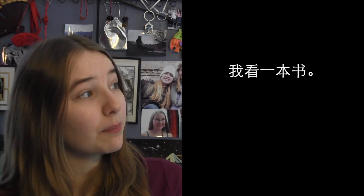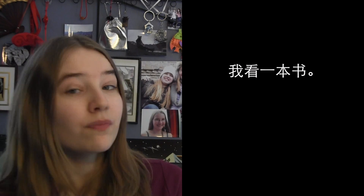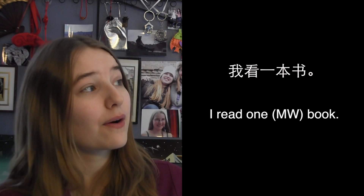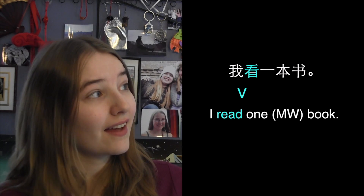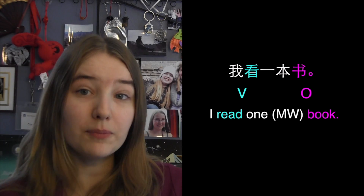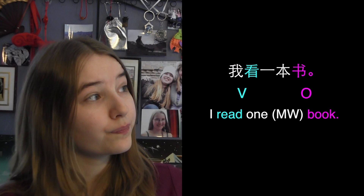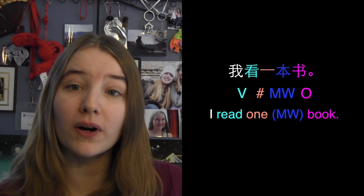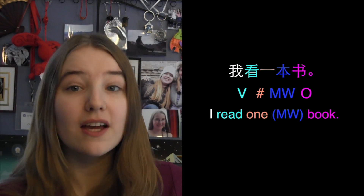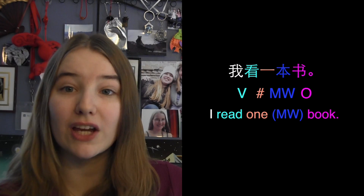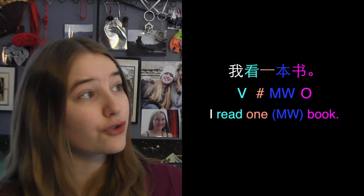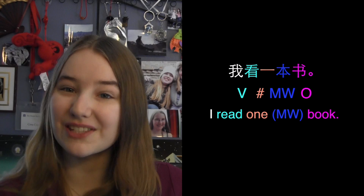For example, I could say 我看一本书 — I read one book. We can see here that our verb is 看, and the object is 书. The number 一 and the measure word 本 have to go before the object, because they are showing how many objects we have. This will split the verb object phrase 看书, but that's totally okay.